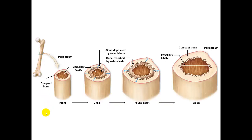Here is a figure showing the process. In an infant, you can see the size of the bone with the periosteum on the outside and the medullary cavity on the inside. As you go to a child, bone is deposited by osteoblasts creating circumferential lamellae, while simultaneously in the medullary cavity, bone is resorbed by osteoclasts. Bone growth is proportional from childhood through young adult into adulthood.